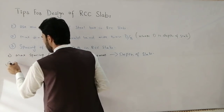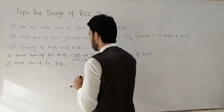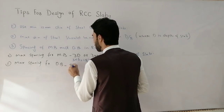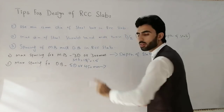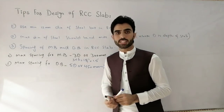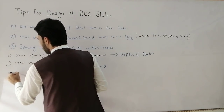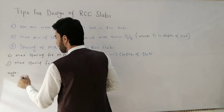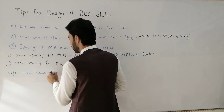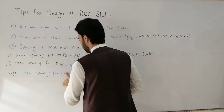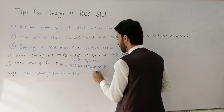Maximum spacing for distribution bars: you can use 5D or 450 millimeters, whichever is less, where D is the depth of the slab. This formula gives us the maximum spacing for distribution bars in RCC slab.